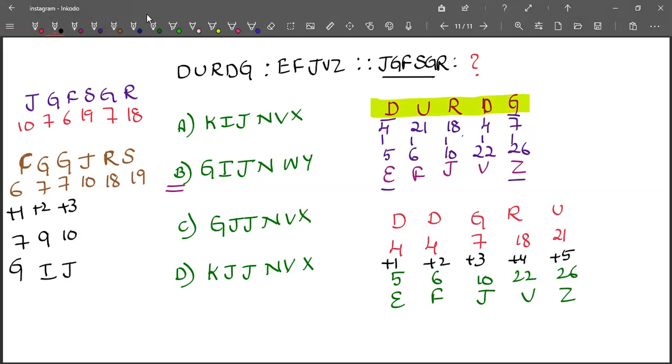And plus 3 to the third number, 7 plus 3 is 10, 10 is J. And plus 4 to the fourth number, 10 plus 4 is 14, 14 is N. Plus 5 to the fifth letter, 18 plus 5 is 23 which is W, and 19 plus 6 is 25 which is Y.